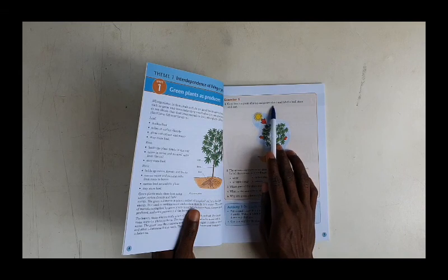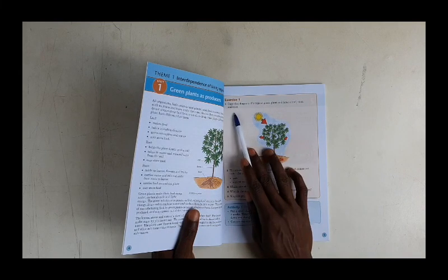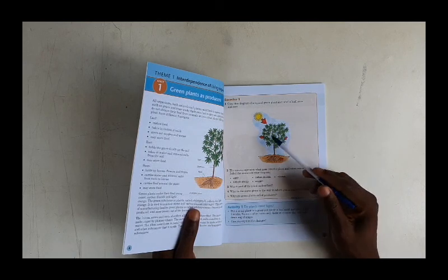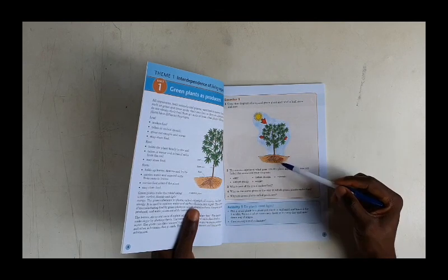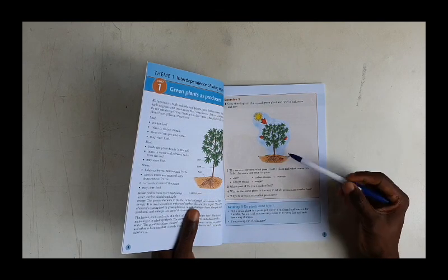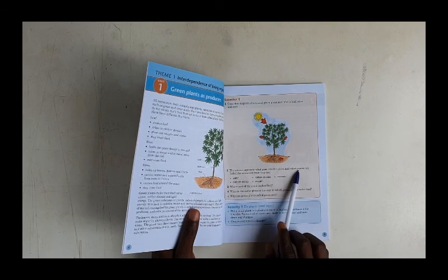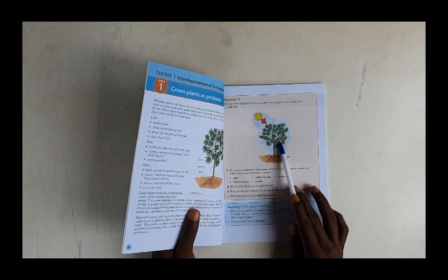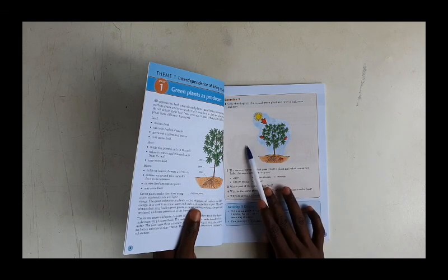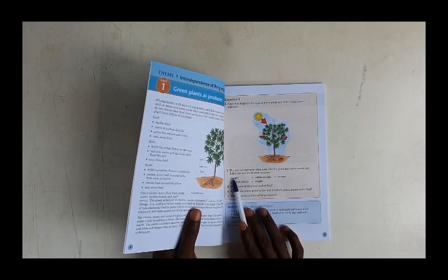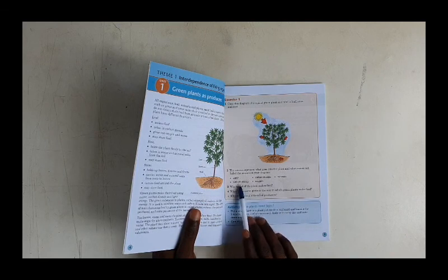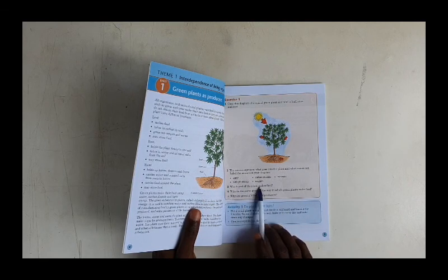Now the arrows represent, okay, copy this diagram of a typical green plant and label the leaf and the stem. This is the leaf, this is the root. The arrow represents what goes into the plant and what comes out of it. Carbon dioxide comes into the plant, oxygen leaves the plant. Label the arrow on the diagram. Which part of the plant makes food?